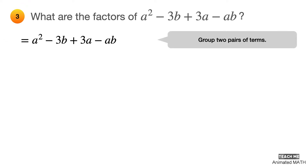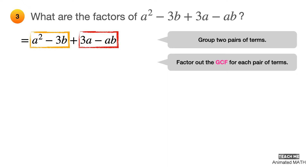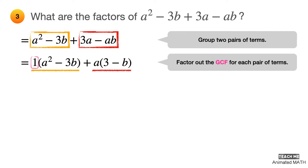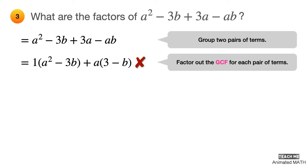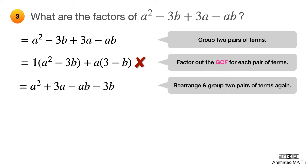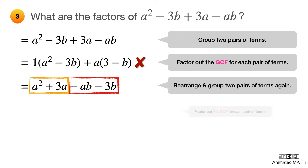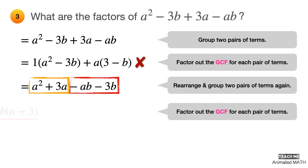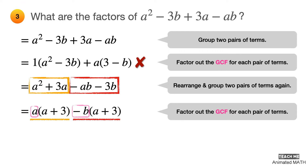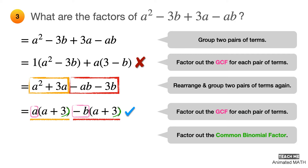Group two pairs of terms and work on them separately. The pairs of terms are shown using the orange and red boxes. Factor out the greatest common factor from each pair of terms. These GCFs are 1 and A. Now here's the interesting thing — there is no common binomial factor in this pairing of terms. Sometimes there is an element of trial and error when you factor by grouping. In this example, you should try rearranging the terms and group two pairs of terms again. Factor out the GCF again from each pair of terms. These are A and negative B. Notice that you now have a common binomial factor, which is A plus 3. This is thanks to the rearranging we did earlier. The other binomial factor is A minus B, and the final answer is (A + 3)(A − B).